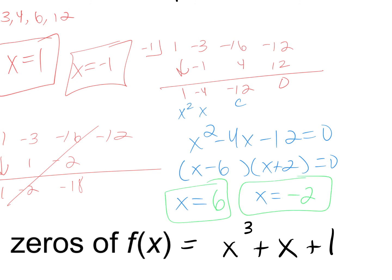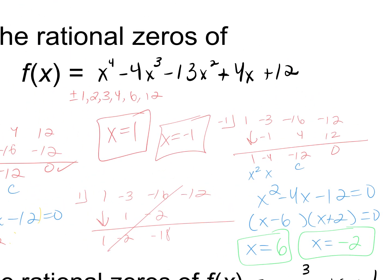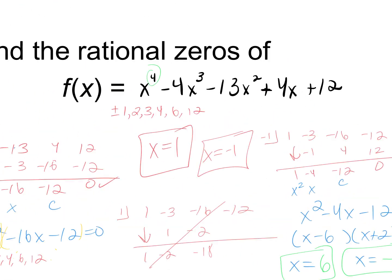So if you guys were asked to graph this, you should be able to. Where is this going to cross the x-axis? At four places: negative 2, negative 1, positive 1, and 6. Does it go through each of those or does it touch and turn? It goes through — multiplicity of 1, it's an odd number of multiplicity. What's the end behavior? Rising left, rising right — it's even, both going up since it's positive.